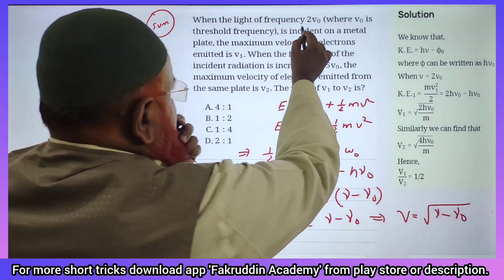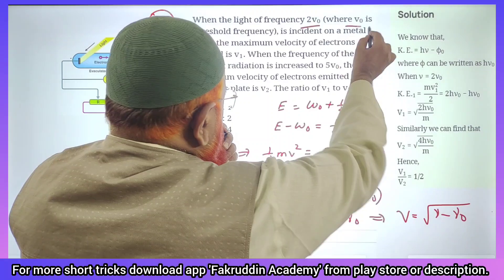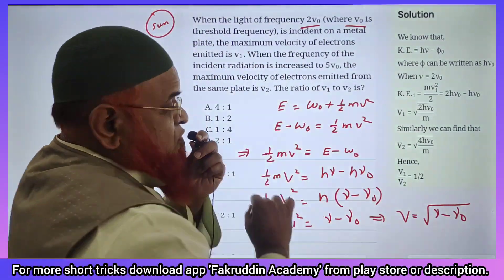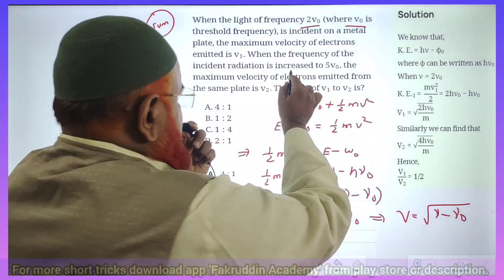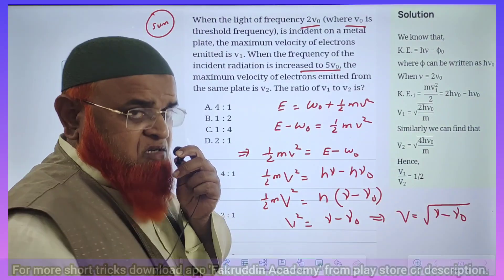Here, light is having frequency 2ν₀ and ν₀ is the frequency of threshold, threshold frequency, and the frequency of incident radiation is increased to 5ν₀.